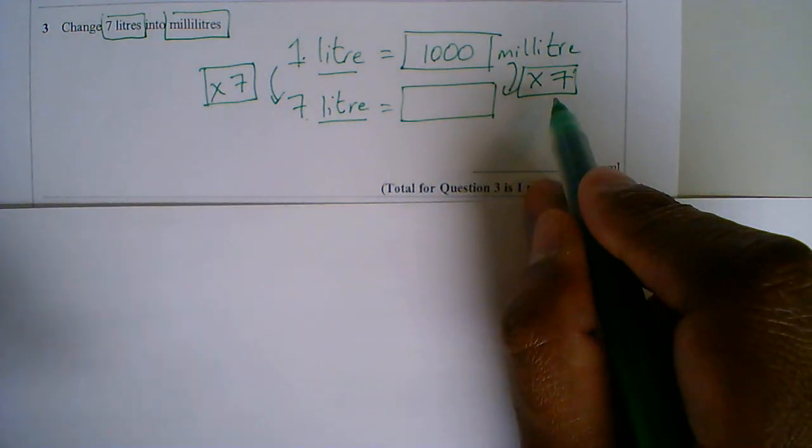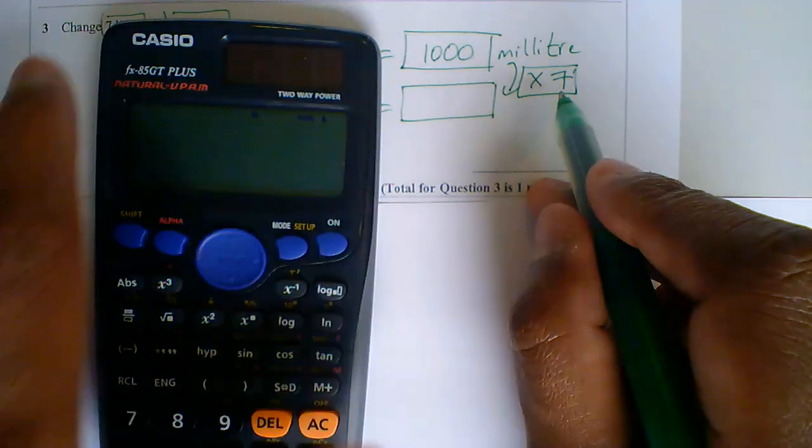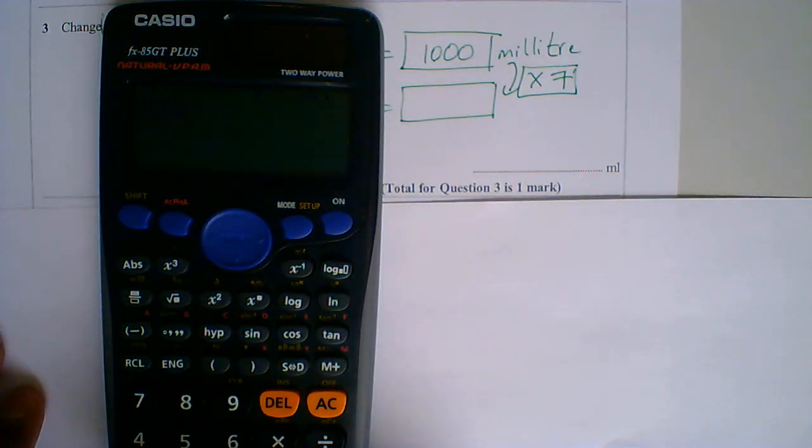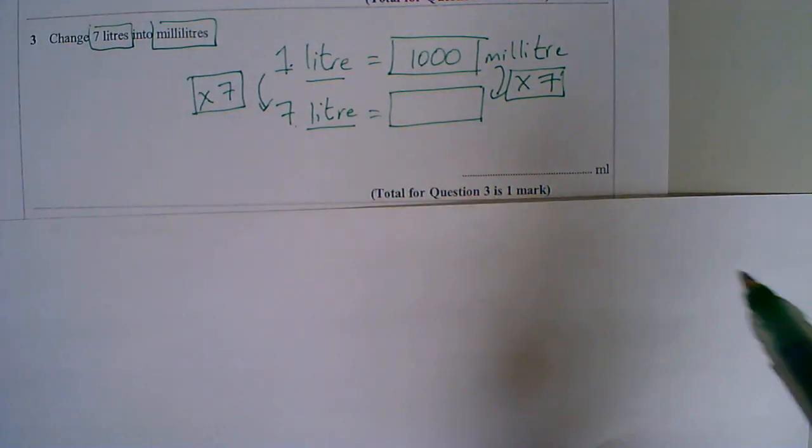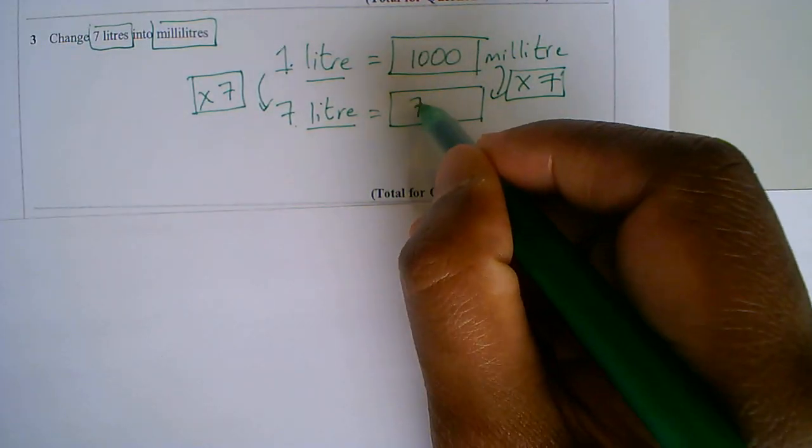1000 times 7. You are allowed a calculator, because it's a calculator paper. 1000 times by 7 gives me 7000. 7000.